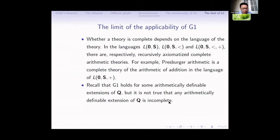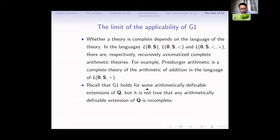Finally, I want to talk about the limit of applicability of G1. First, Presburger arithmetic is a complete decidable theory — so G1 does not hold for it. We know that G1 holds for some arithmetically definable extensions of Q, but it is not true that G1 holds for any arithmetically definable extension of Q.